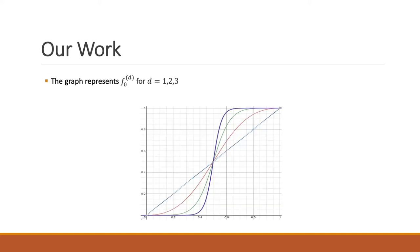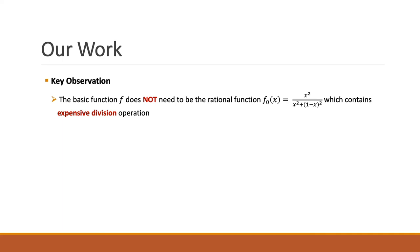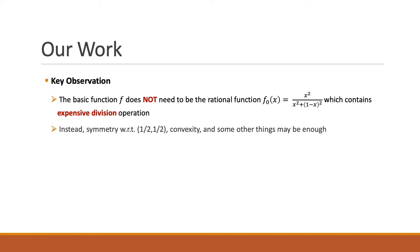In this work, we tried to reinterpret the iterative algorithm from the previous work into the perspective of polynomial composition rather than the iterative algorithm itself. The squaring and normalization process can be regarded as an evaluation of the rational function f₀, defined as x² / (x² + (1 − x²)). Then the algorithm is actually the composition of f₀, and we could rephrase the goal as composing f₀ to make it get close to the step function. Here is the graph of the f₀ composition. The red line is f₀, which looks somewhat symmetric and is a wavy function. After looking at the graph, we realized there is no reason for the basic function to be this rational function f₀, which requires a very expensive division operation. Instead of the specific formula for f₀, we may need some other properties — for example, symmetry and convexity — and some other things may be enough.